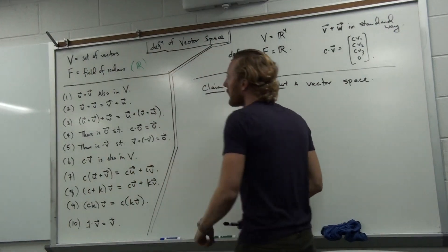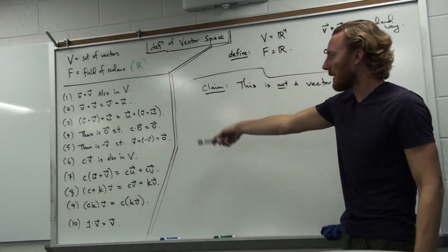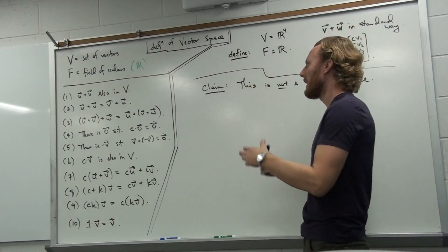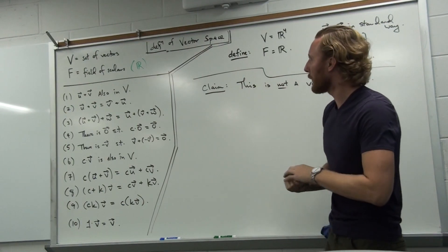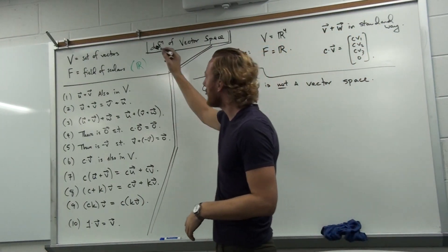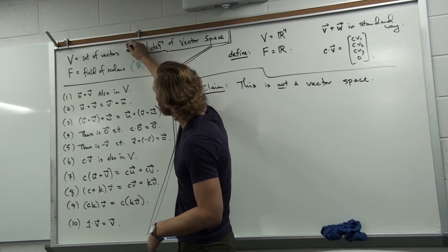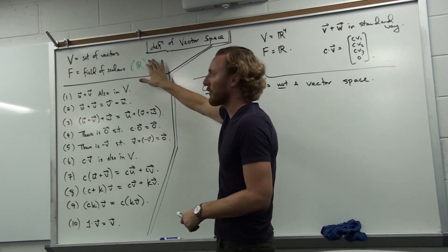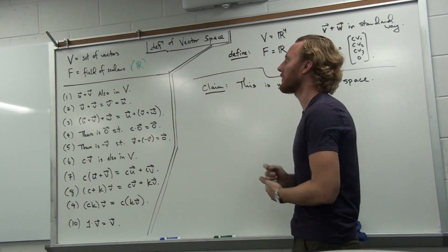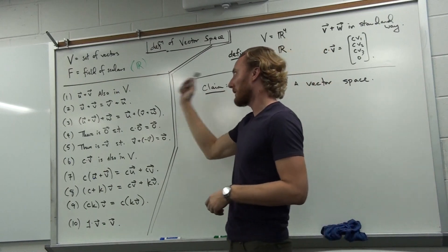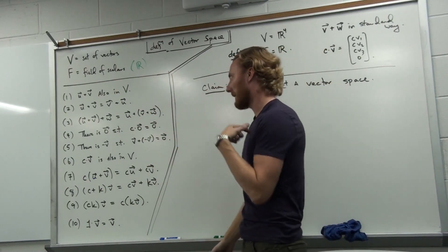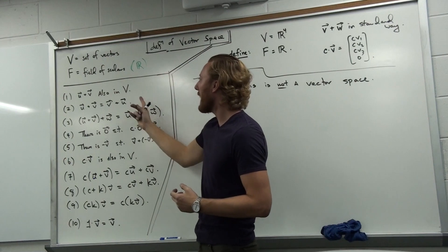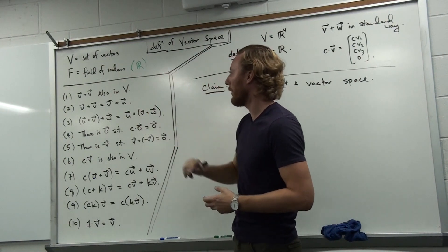Alright, so last video we laid out the ground rules for what makes a vector space. You need a set of vectors, you need a field of scalars — these are just good old fashioned numbers, frequently the real numbers — and when you sum vectors you need to get another vector in return. The order in which you add vectors should not matter, whether you're adding two or three.